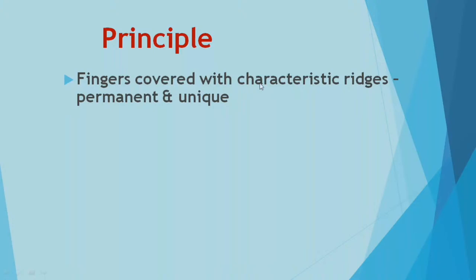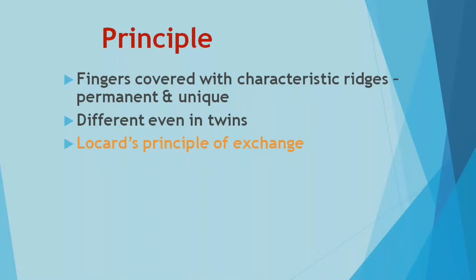The principle of fingerprinting is that fingers are covered with characteristic ridges that are permanent and unique for every individual — even univovular (identical) twins have different fingerprints. Locard's principle of exchange is a key theme: when two bodies come together or come close together, there is always an exchange of material from one to another. This helps sequence the scene of crime and link connections between two individuals.